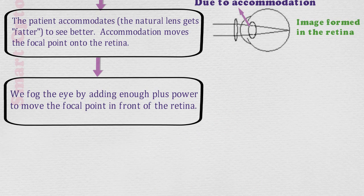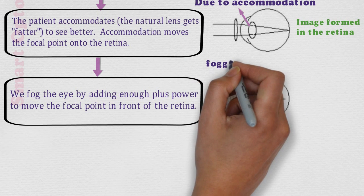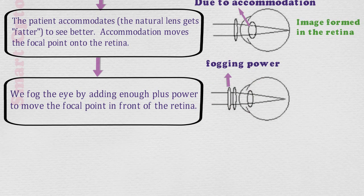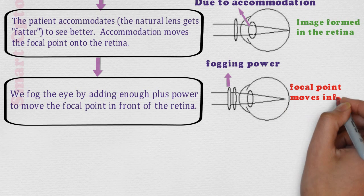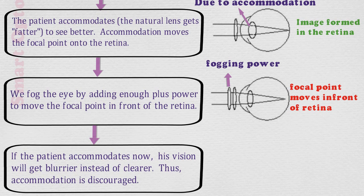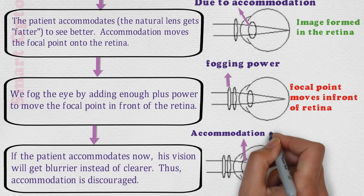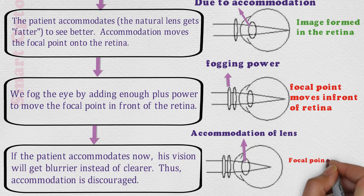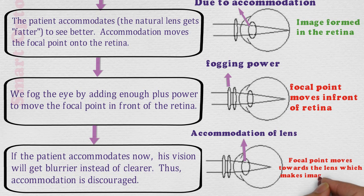Now we fog the eye by adding enough plus power to move the focal point in front of the retina. Here in this figure, this is the fogging power, due to which the focal point moves in front of the retina. If the patient accommodates now, his vision will get blurrier instead of clearer. Thus, accommodation is discouraged. Here in this figure, due to accommodation of the lens, the focal point moves towards the lens, which makes the image more blur.